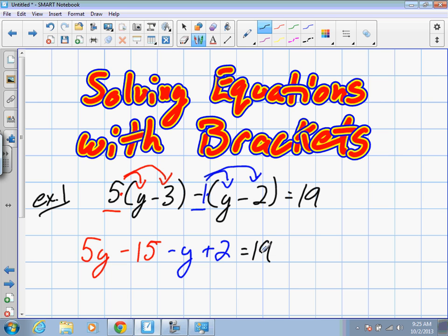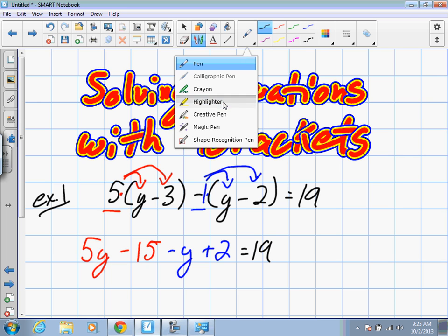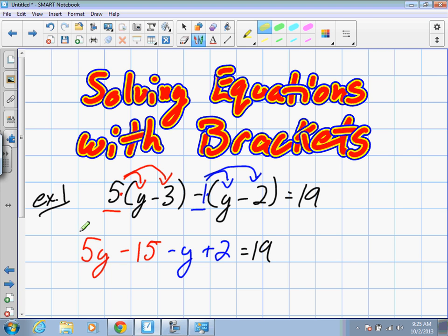Our next step is to collect our like terms. What are our like terms here? 5y and negative y. Good. What else? 2. Good. So those are our like terms. There is another. 19. That's right. 19 is a like term of negative 15, 2, and 19. They're all constants. These are all just numbers with no variables. These ones have variables attached.